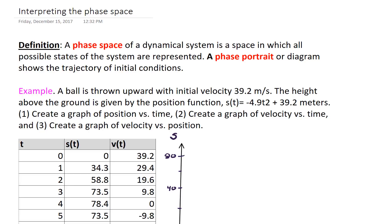Hello, in this video we're going to talk about interpreting the phase space. So definition, a phase space of a dynamical system is a space in which all possible states of the system are represented. A phase portrait or diagram shows the trajectory of initial conditions.